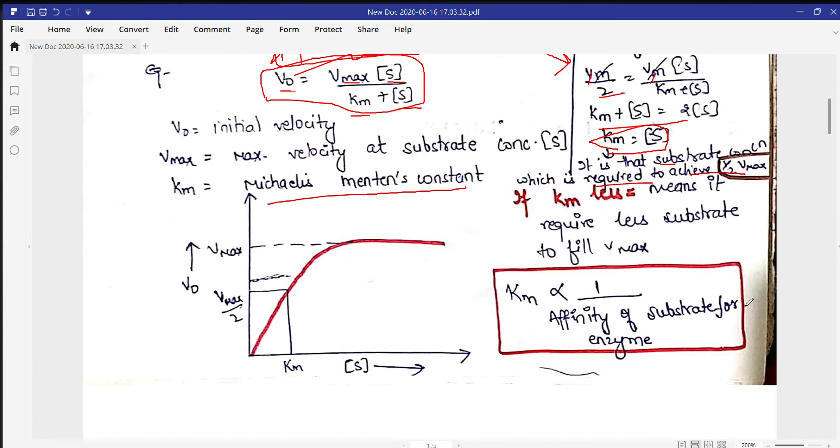Km - just look at here. This is the Y axis and this is the X axis. At the X axis we have substrate, while at Y we have initial velocity.